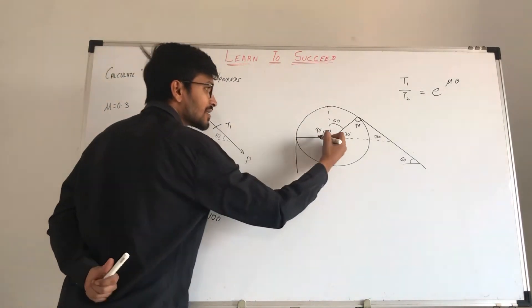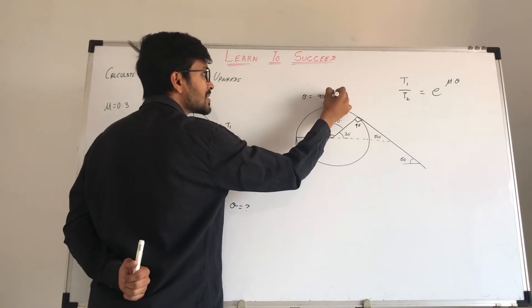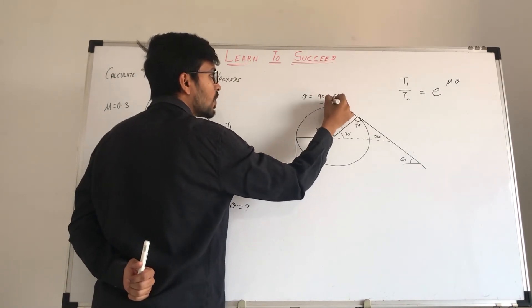So we have the whole angle, from here to here, which was theta. So theta will be 90 plus 60, that is equal to 150 degrees.